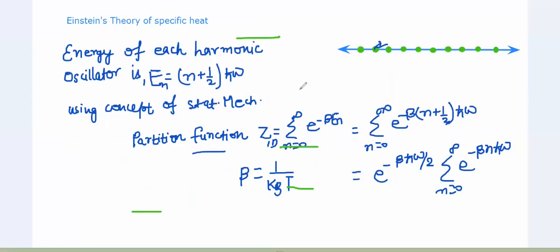In order to explain this experimental result and deviation from Dulong and Petit's Law, Einstein made an attempt. He used the concept of the harmonic oscillator originally defined by Max Planck. According to Albert Einstein, every atom should be treated as a harmonic oscillator confined in a harmonic well formed by its neighboring atoms. Each particular atom is treated as a harmonic oscillator sitting in a well formed by its neighbors.